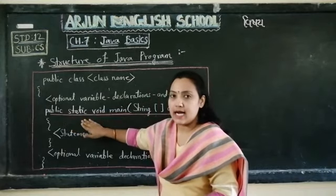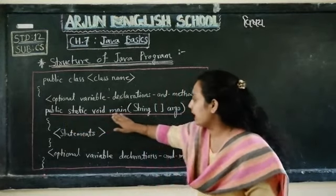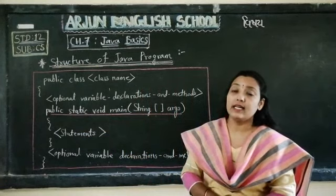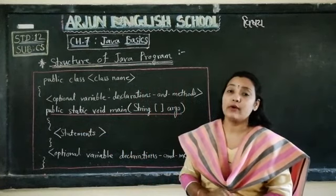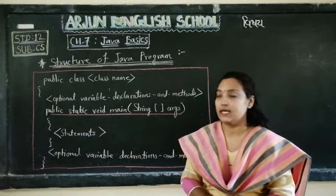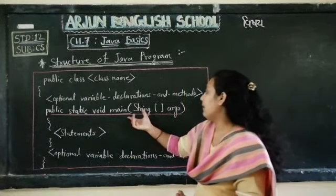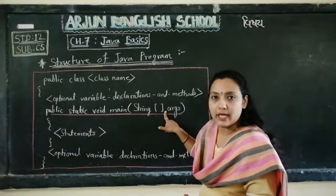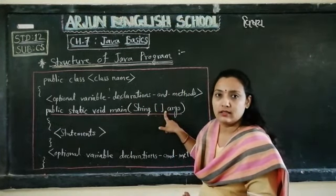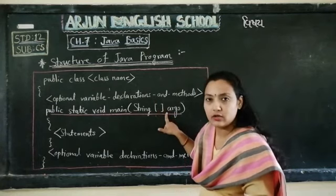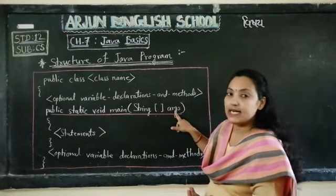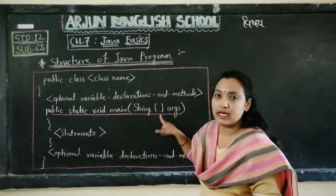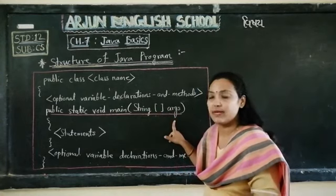After that: public static void main — these are our keywords, and you have to write these things compulsorily. After that, String with a square bracket pair — opening and closing — and then args. So this part, String[] args, is also compulsory to write.